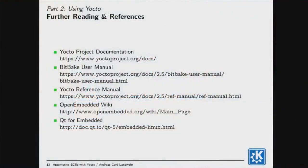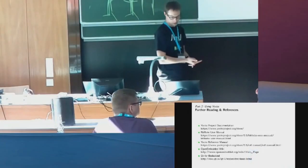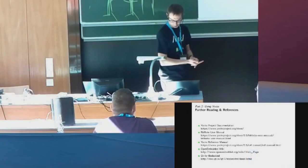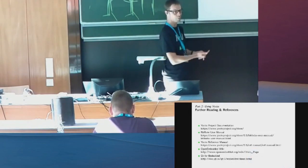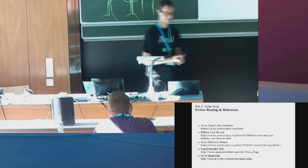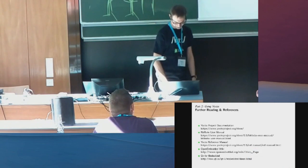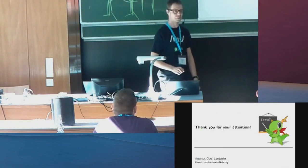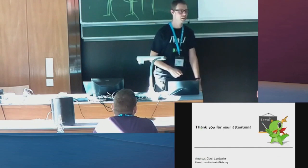I also added a page of references — I won't read them all, but the most important starting point is the Yocto Project documentation website, where you'll find the quick-start guide, the full reference manual, and the BitBake reference. One thing to remember: if you ever need to search for BitBake layers, look for the OpenEmbedded layer index.